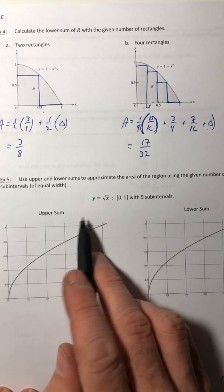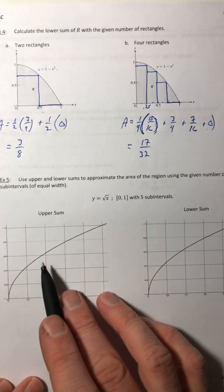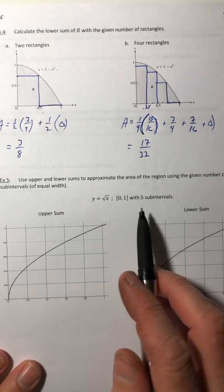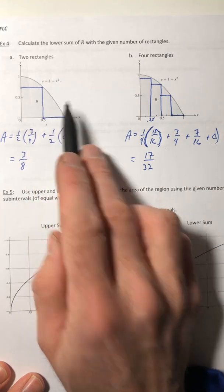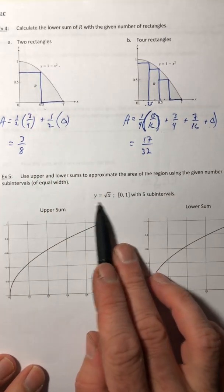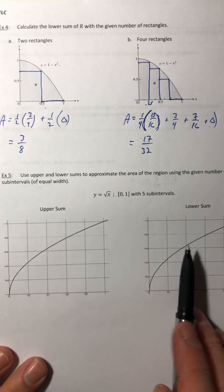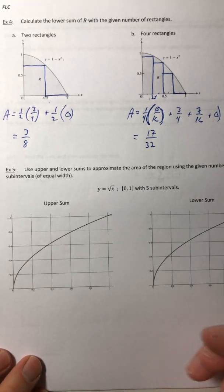All right, welcome back. So let's do an upper and a lower sum of a different curve. Last time it was with an upside-down parabola, so now let's take a square root and we're gonna do an upper and a lower sum so you can see how they're similar and how they're also different.